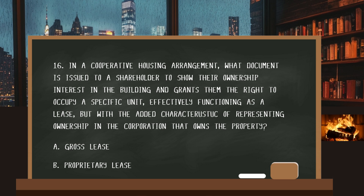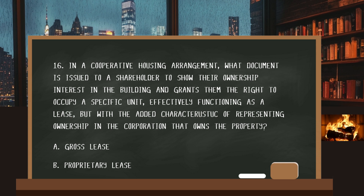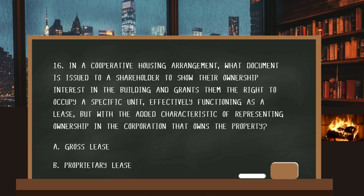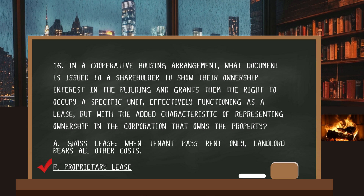Number sixteen. In a cooperative housing arrangement, what document is issued to a shareholder to show their ownership interest in the building and grant them the right to occupy a specific unit — effectively functioning as a lease, but with the added characteristic of representing ownership in the corporation that owns the property? The answer is B: a proprietary lease. A gross lease is when a tenant pays rent only, and the landlord bears all other expenses.